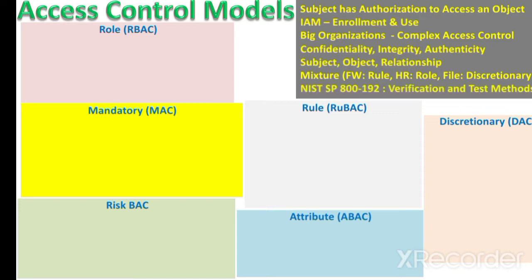NIST has a special publication, 800-192, which enlists the verification and test methods for access control policies and models. Now coming to the first access control model: role-based access control.